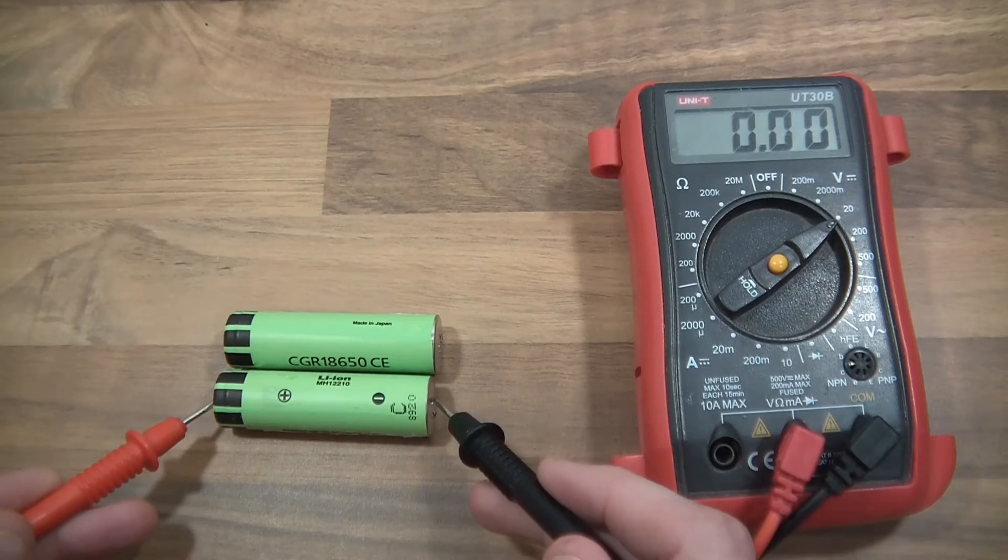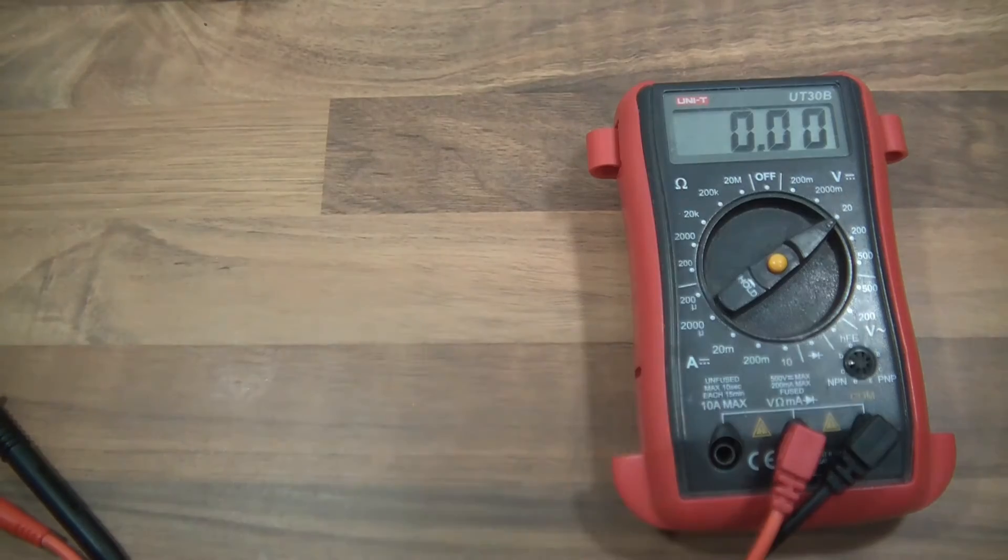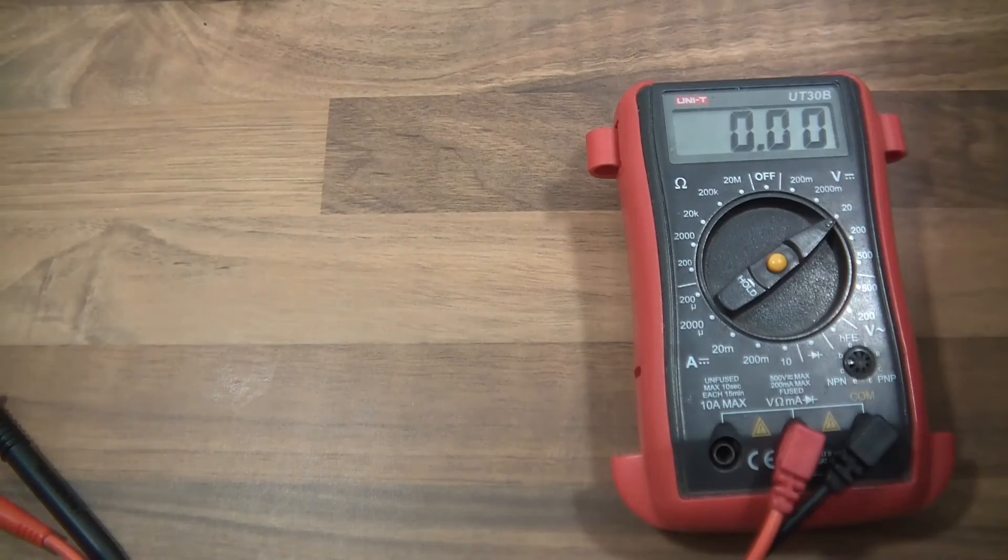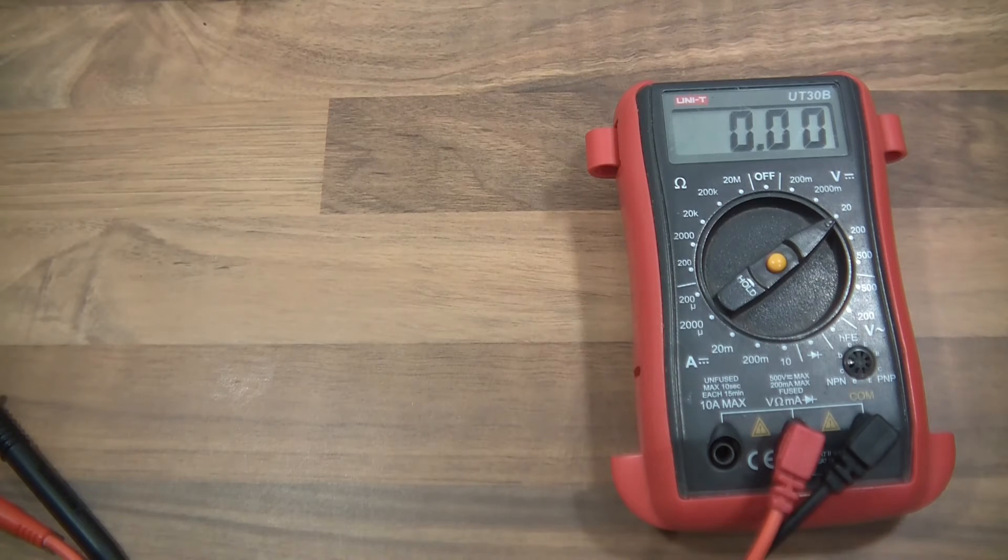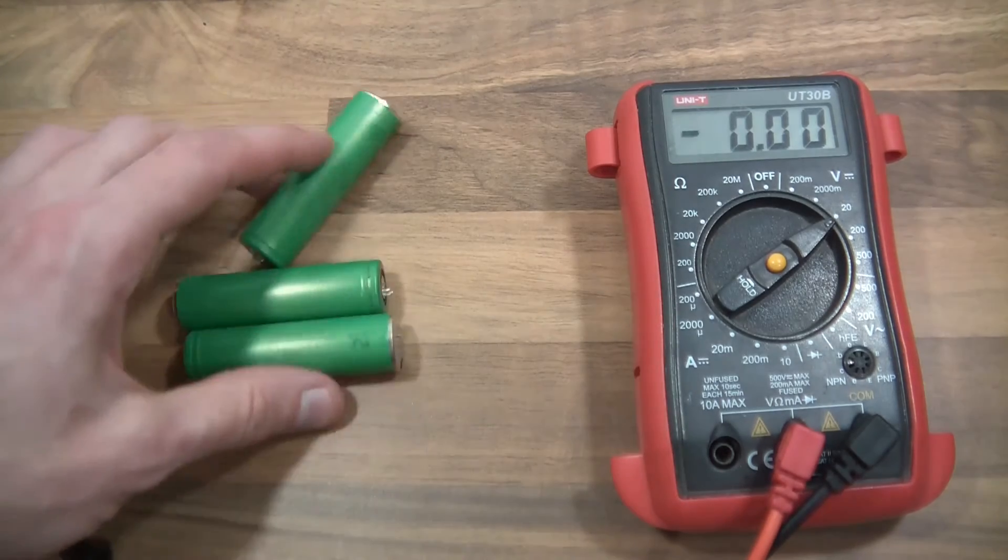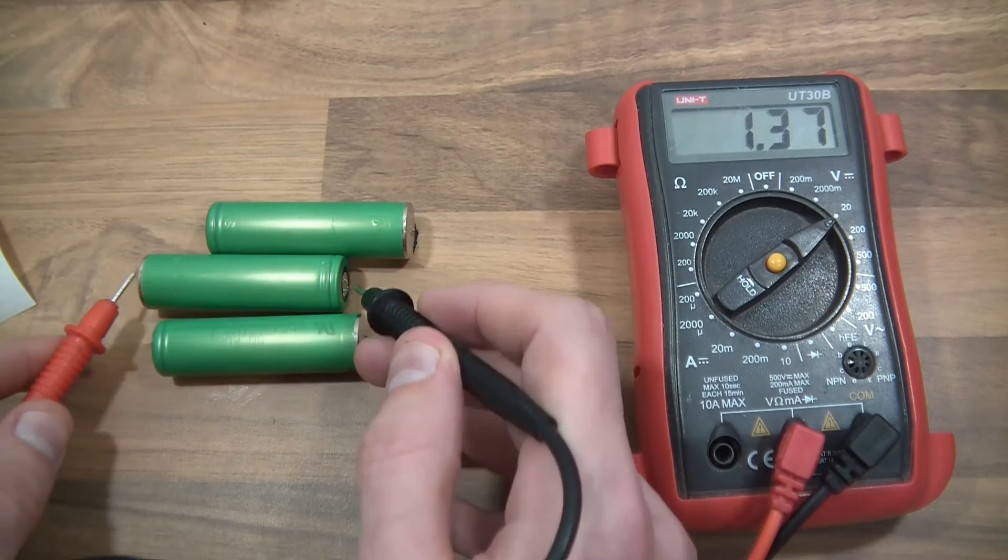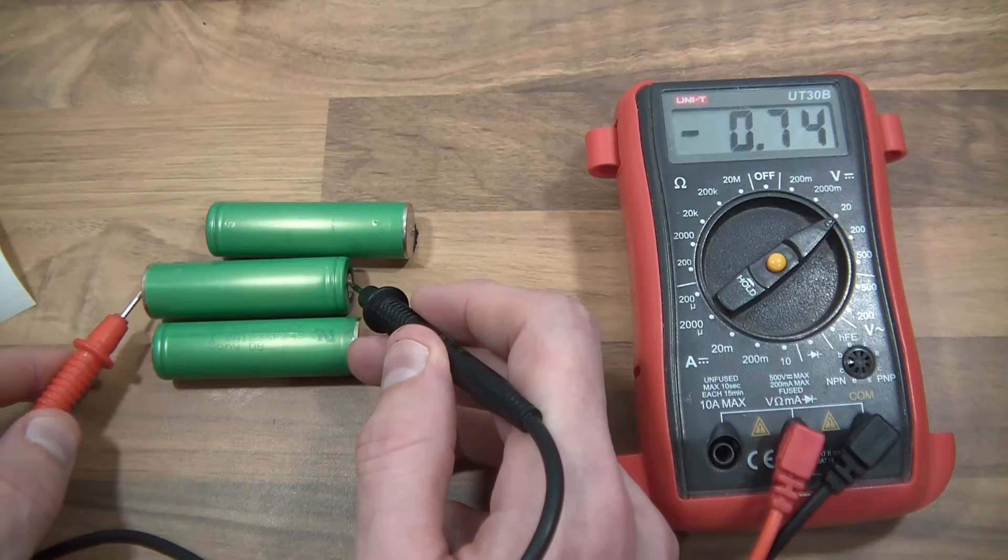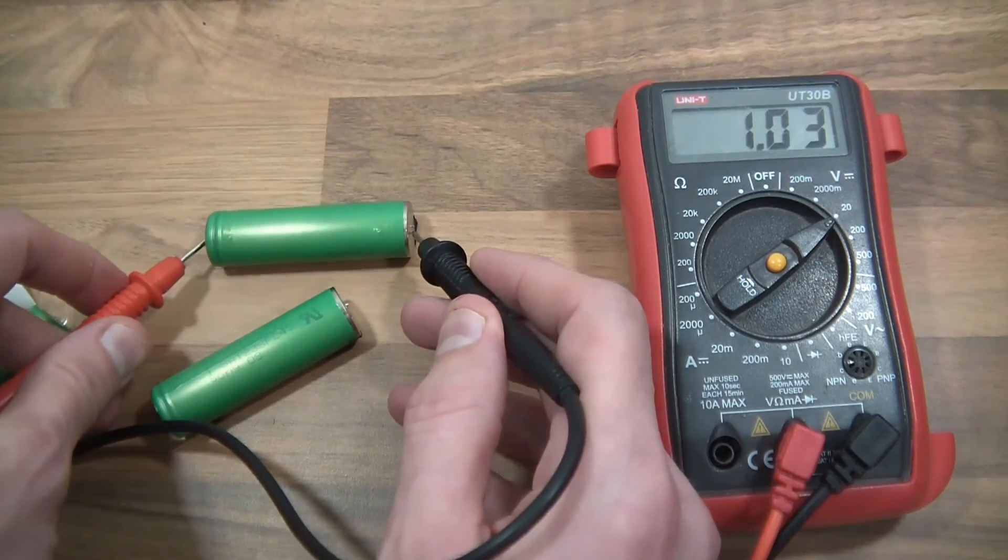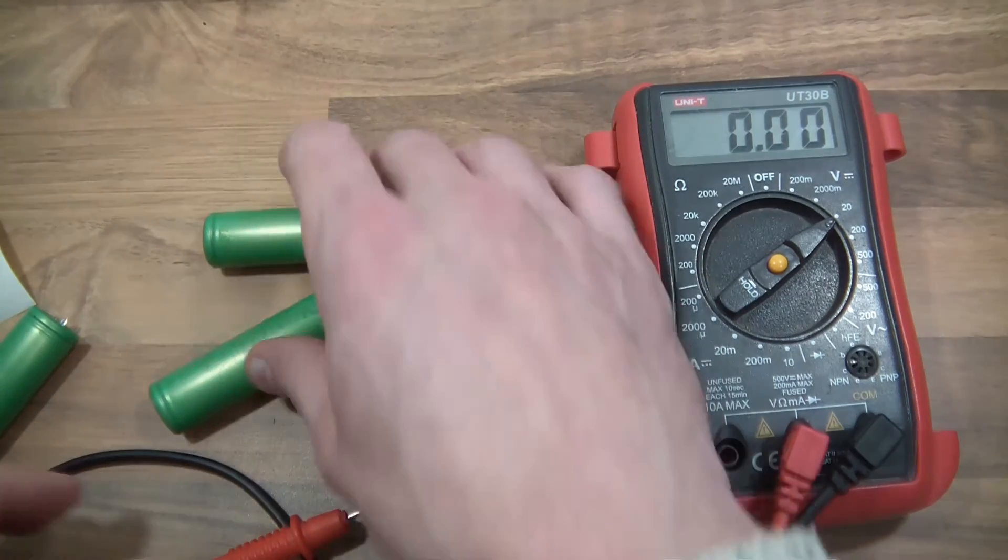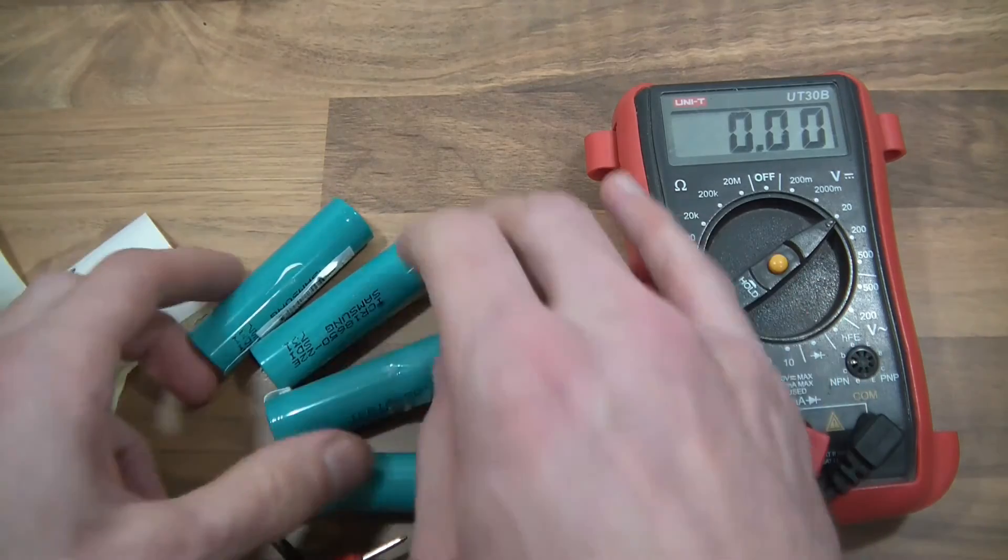Okay, 1.3, 1.3. Let's try these ones next. 1.4, 0.8. So those go in the 1V bag, that goes in the 0V. Let's try these ones next.